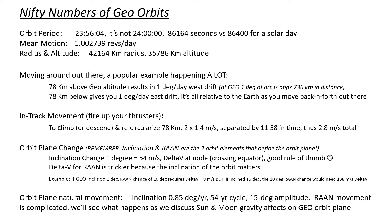Lastly on orbit plane, there is natural movement. Inclination moves 0.85 degrees per year — it's in a 54-year cycle with an amplitude of 15 degrees. RAAN movement is a little more complicated, and we'll get more into that when we talk about the sun and moon gravity effects, because they're the forces that are influencing the orbit plane.